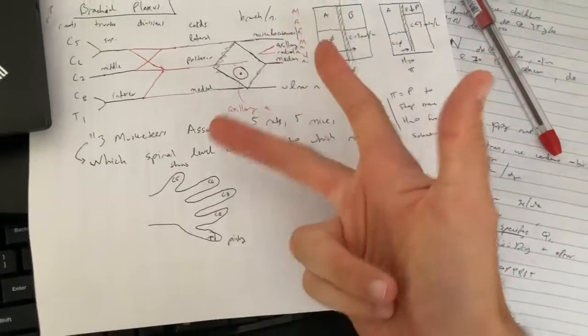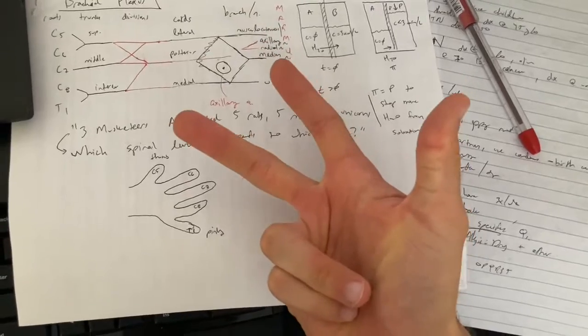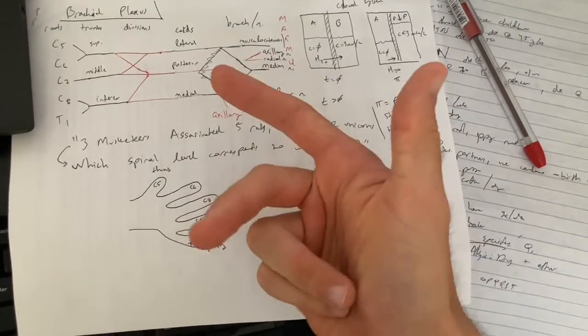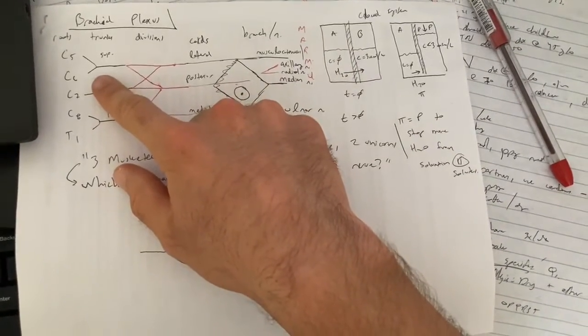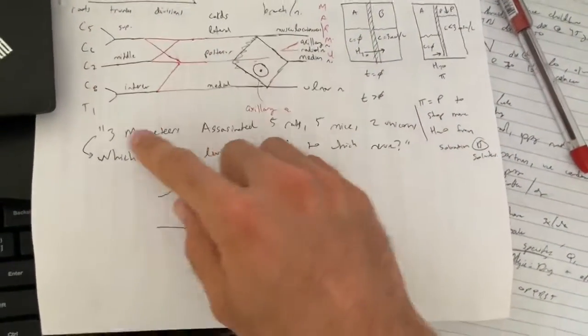You do this with your hand. You just say three musketeers. Three corresponds to your thumb, index, and middle finger. That means C5, C6, C7 is the three.